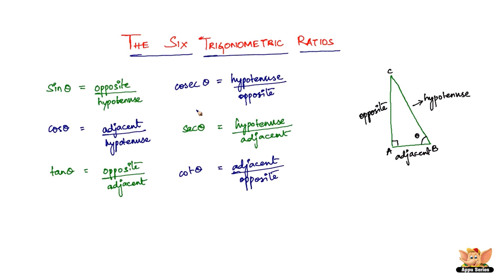Now that we know the trigonometric ratios, let me briefly explain how they are used. If you have theta and the length of one side and want to find another side, you use the appropriate ratio. For example, sine 60 degrees equals root 3 by 2. If you have the opposite side and need the hypotenuse, you substitute the value and solve. We will look into actual problems in coming videos.